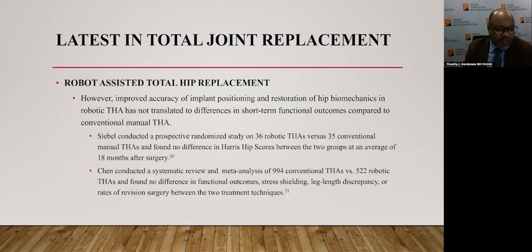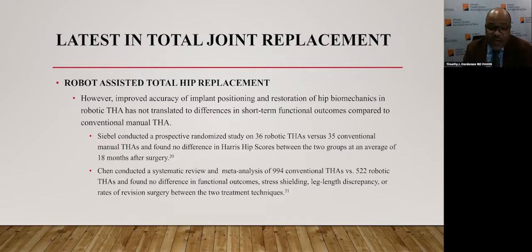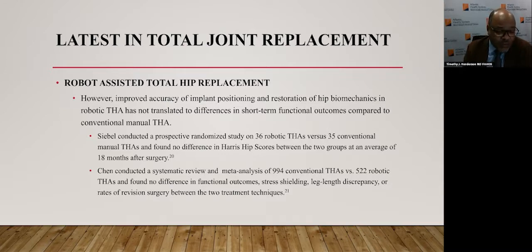Robot-assisted total hip replacement: despite accuracy improvement in implant positioning and restoration of hip biomechanics, robotic-assisted total hip replacement has not translated to differences in short-term functional outcomes compared to conventional manual THA. Siebel conducted a prospective randomized study on 36 robotic total hips versus 35 conventional total hips and found no difference in Harris hip score between the two groups at an average of 18 months. Chen conducted a systematic review and meta-analysis of 994 conventional versus 522 robotic total hips and found no difference in functional outcomes, stress shielding, limb length discrepancy, or rates of revision.